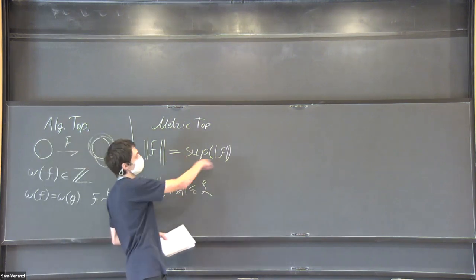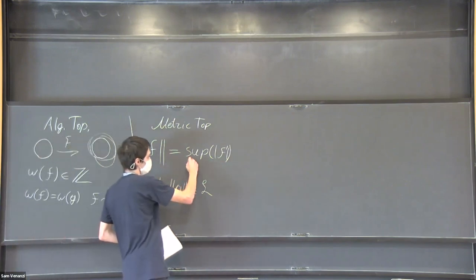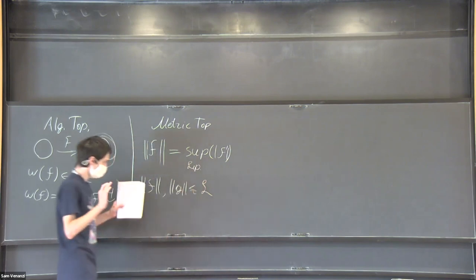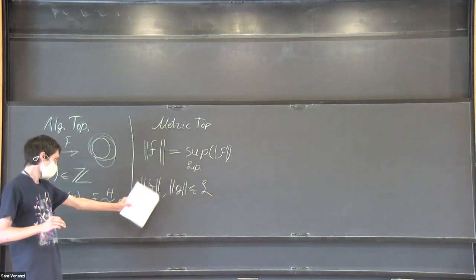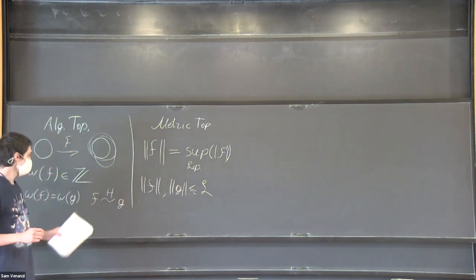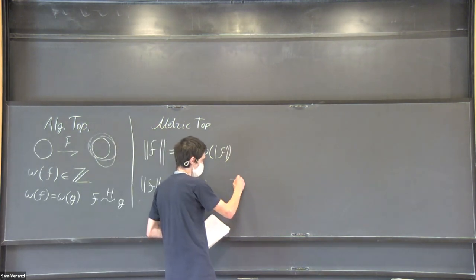Oh yeah, I'm sorry, that thing is called Lipschitz constant. Could it happen that these two mappings are small in the metric sense, but can we find a homotopy between them that is—